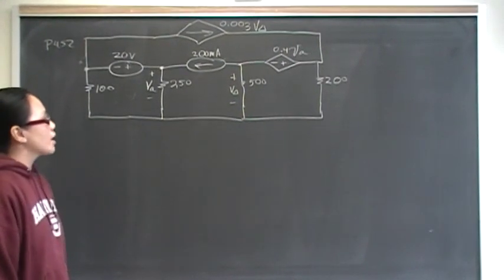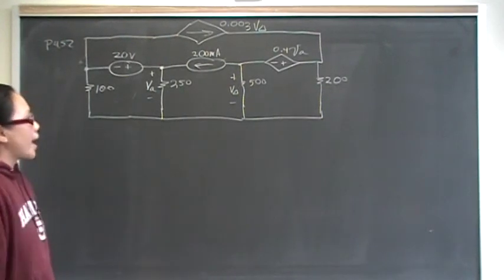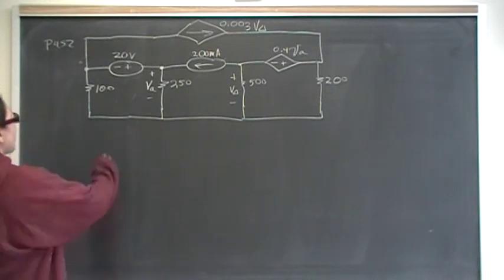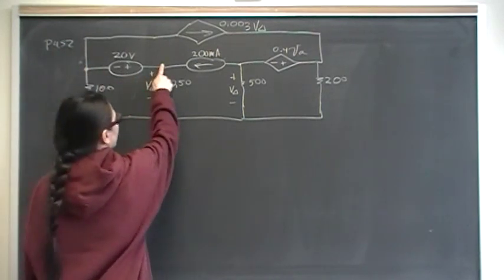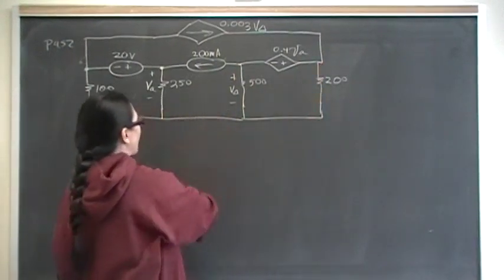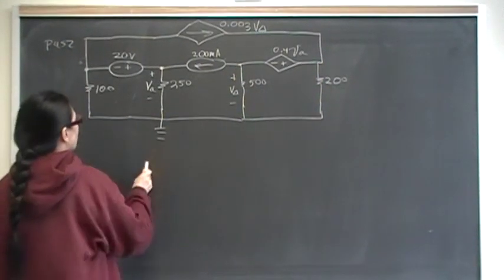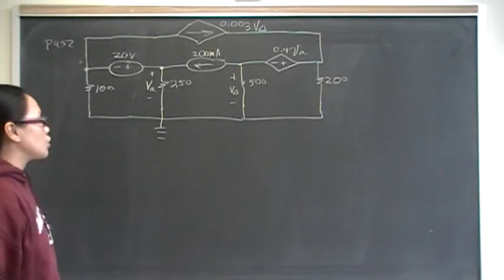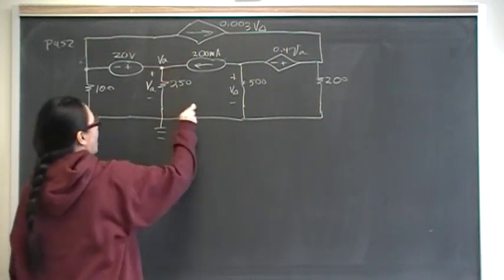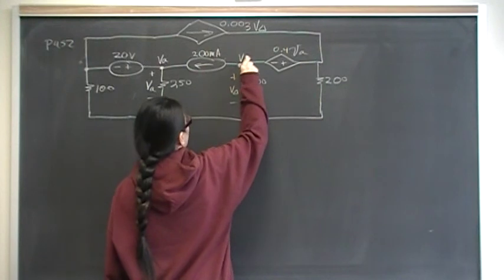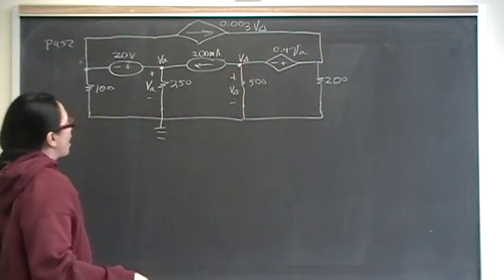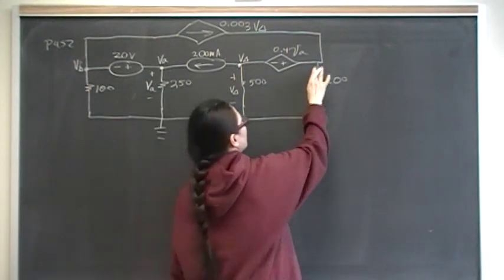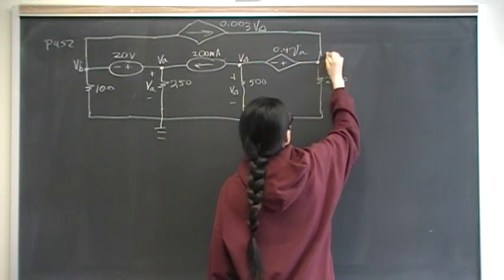Let's go ahead and identify our nodes. A node is a point where two or more circuit elements meet. So we've got a node here, a node here, a node here, a node here, a node here, and a ground node. I'm going to pick this to be my ground. The diagram names two nodes for me: this one is VA, and this one is V delta. So I'm just going to call the others VB and VC to complete the alphabet.